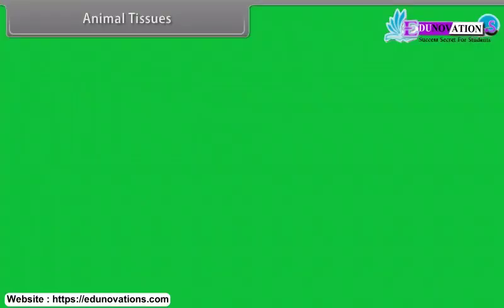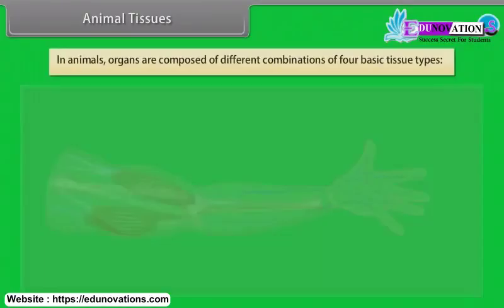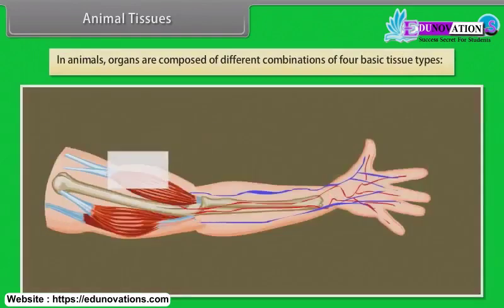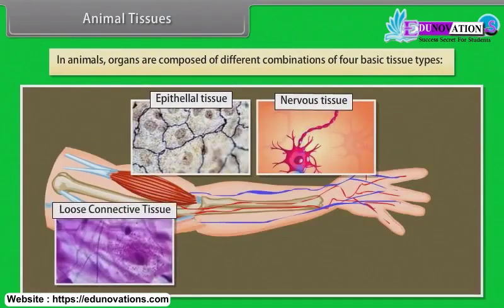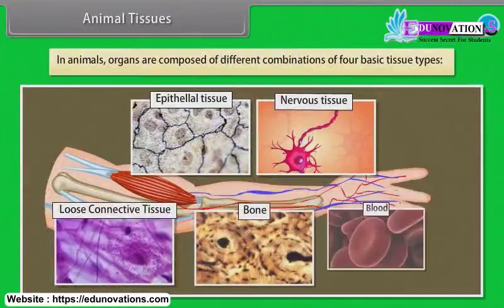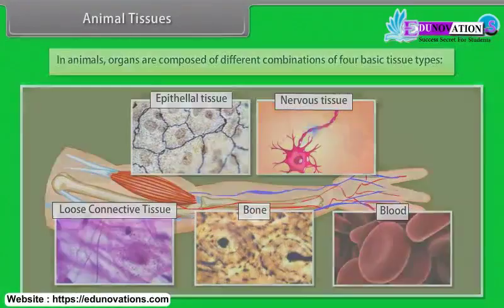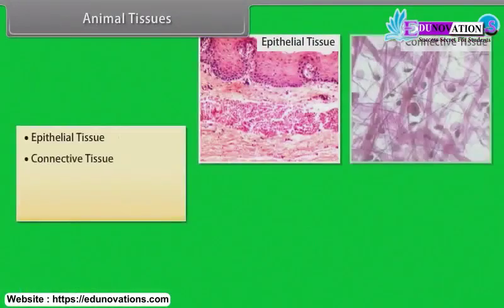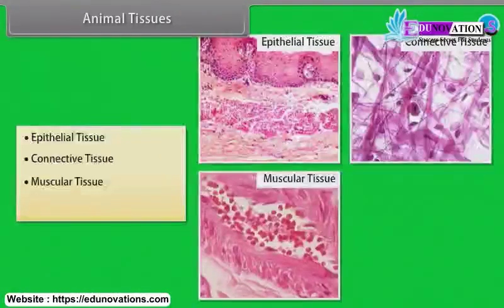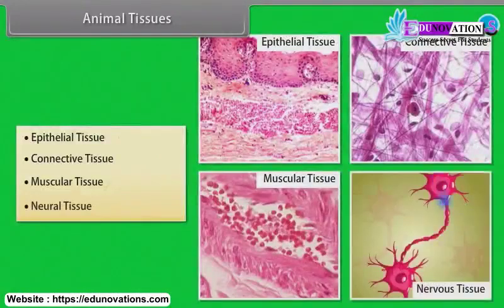Animal tissues. In animals, organs are composed of different combinations of four basic tissue types. They are: epithelial tissue, connective tissue, muscular tissue, and neural tissue. Let's know about them in detail.